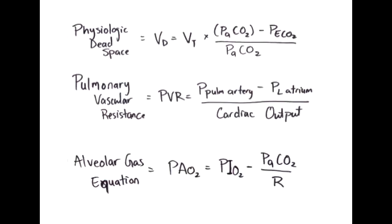What is the equation of physiologic dead space? The equation of physiologic dead space is the tidal volume times the arterial PCO2 minus the expired air PCO2 over the arterial PCO2.